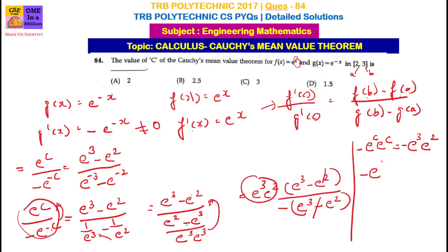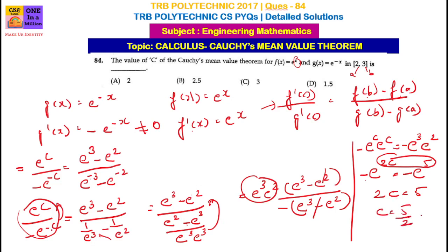So, 2c is equal to 5. Therefore minus e power 2c is equal to minus e power 5. Equating the powers, 2c equals 5, which gives c equals 5 by 2, equal to 2.5.